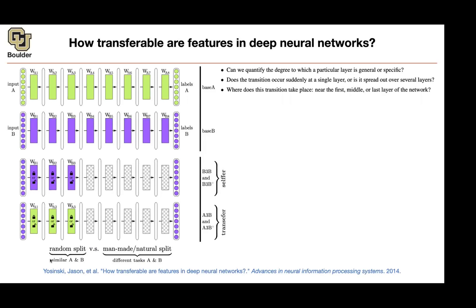You divide your ImageNet data and randomly split it into two sets of similar sizes, A and B. With a random split, tasks are very similar — you have similar images of dogs and cats in both datasets. You can also do another type of split: all man-made images go into task A and all natural images go into task B. These are now different tasks. We want to learn something on A and transfer our learnings to B.